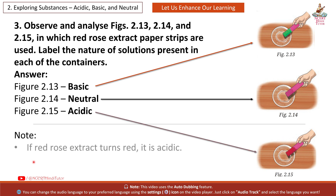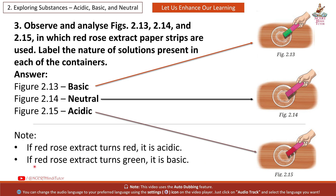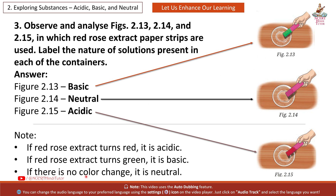Note: If red rose extract turns red, it is acidic. If red rose extract turns green, it is basic. If there is no colour change, it is neutral.